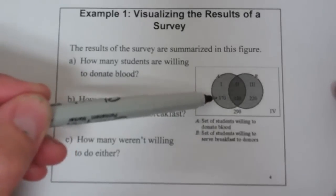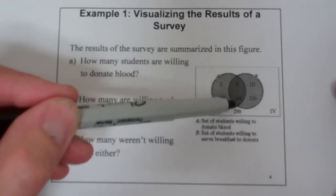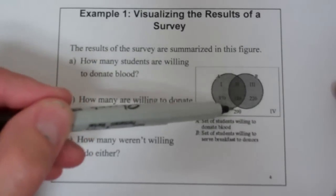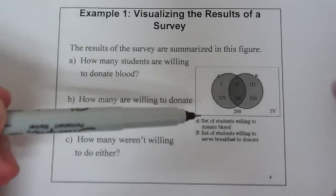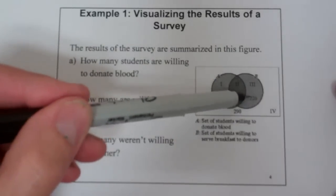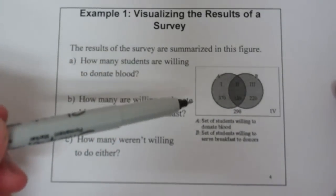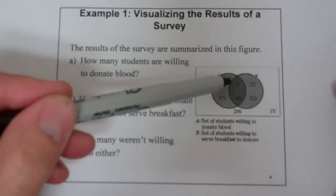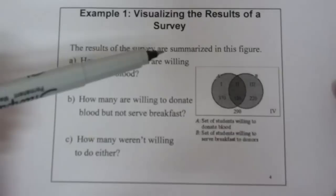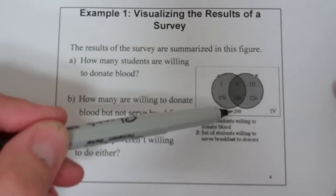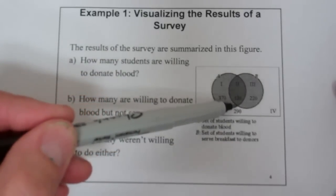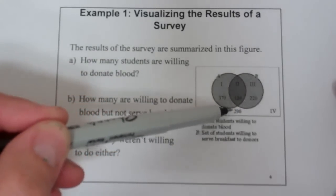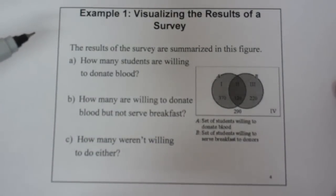These are students that are only donating blood and not serving breakfast. These 120 students right here are in the intersection of donate blood and serve breakfast — so these students are willing to donate blood and serve breakfast. These 220 students in Region 3 are only willing to serve breakfast and not donate blood, because they're outside of the donate blood intersection. And in Region 4, you have 240 students who are neither willing to donate blood nor serve breakfast — these are the ones that responded no to each.